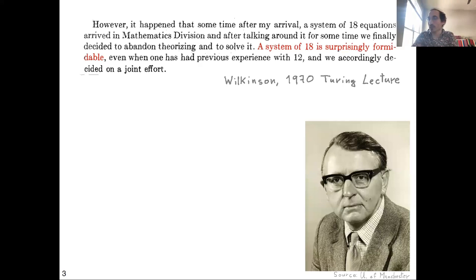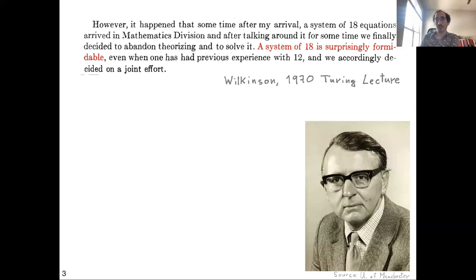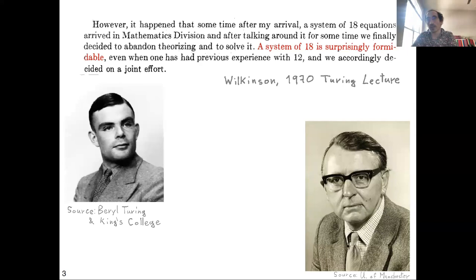What method did they decide to use? Wilkinson had used Gaussian elimination during the Second World War and it more or less worked, but he hadn't researched it further because of the wartime circumstances. So Wilkinson pragmatically said, this worked before, maybe we should try it. But Turing, on the other hand, was relying on pessimistic bounds of the time saying that Gaussian elimination was not good, and believed it would not actually work to solve the linear system.